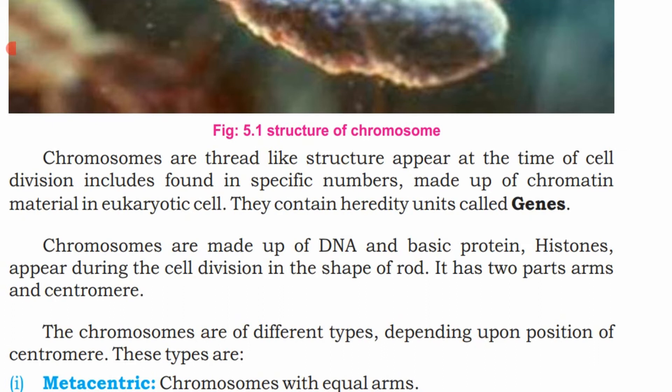Chromosomes are made up of DNA and basic proteins called histones. They appear during cell division in the shape of a rod. Each chromosome has two parts: arms and a centromere.